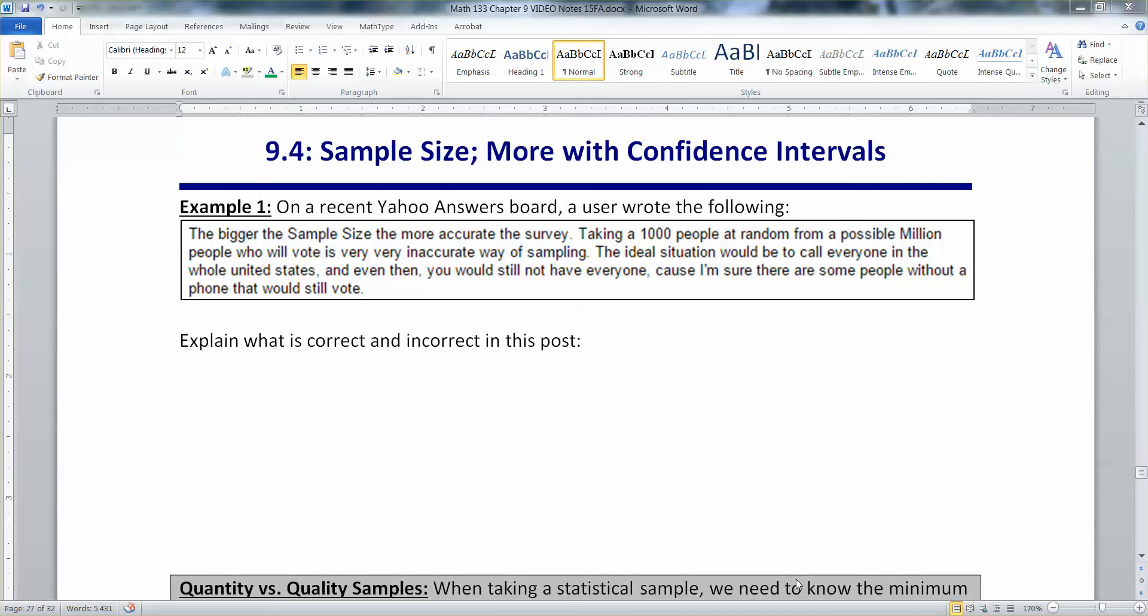I actually found this on a recent Yahoo Answers board and it just cracked me up so I thought I'd share it with all of you. It said the bigger the sample size the more accurate the survey. Taking 1,000 people at random from a possible million people who will vote is a very very inaccurate way of sampling. The ideal situation would be to call everyone in the whole United States and even then you would still not have everyone because I'm sure there are some people without a phone that would still vote.